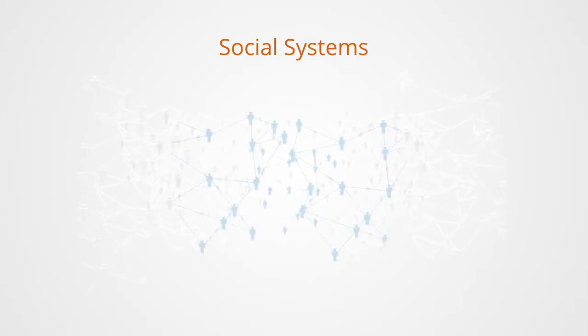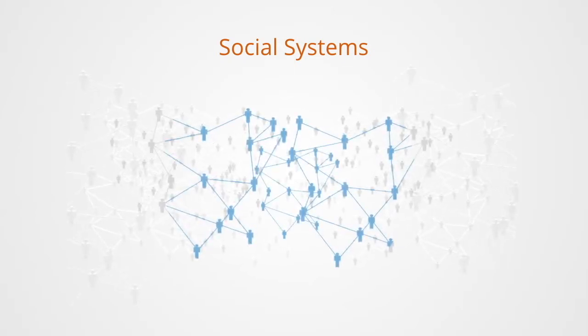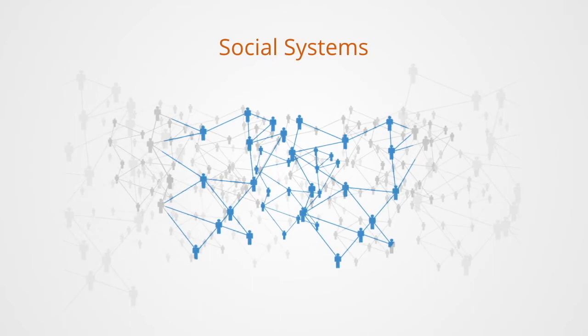Social systems are a type of system composed of individual people and the relations between them through which they are interdependent within the whole organization. Unlike a simple set of people or a group of people where the members may be independent, the essence of social systems is the interdependence between members.